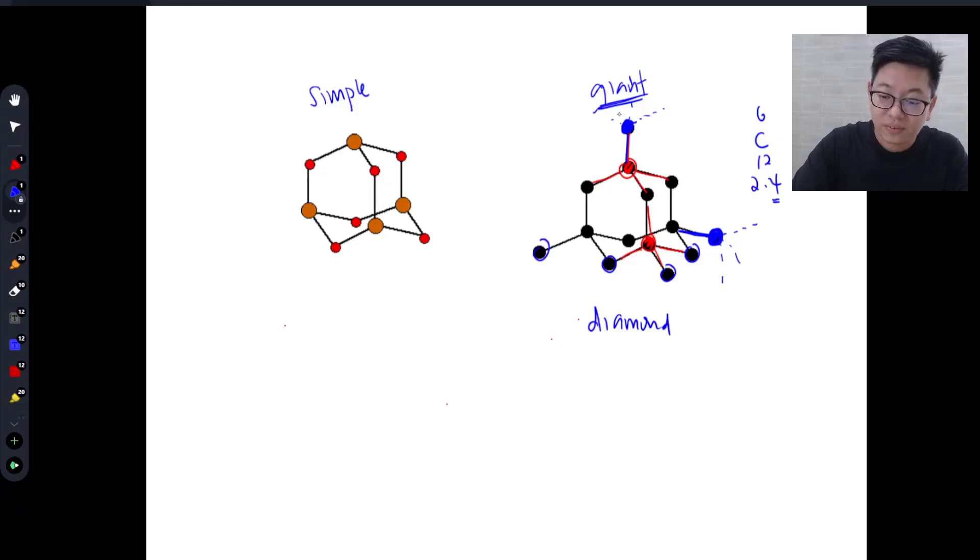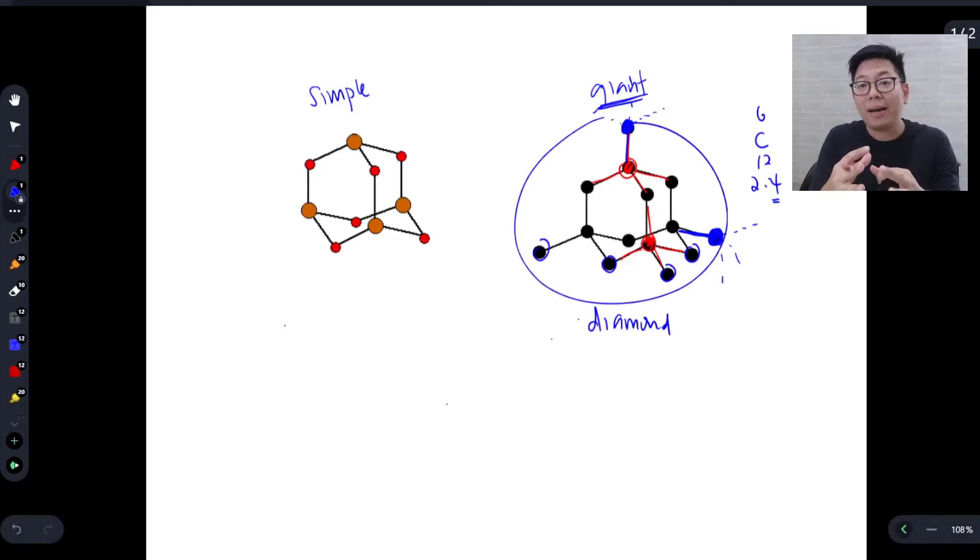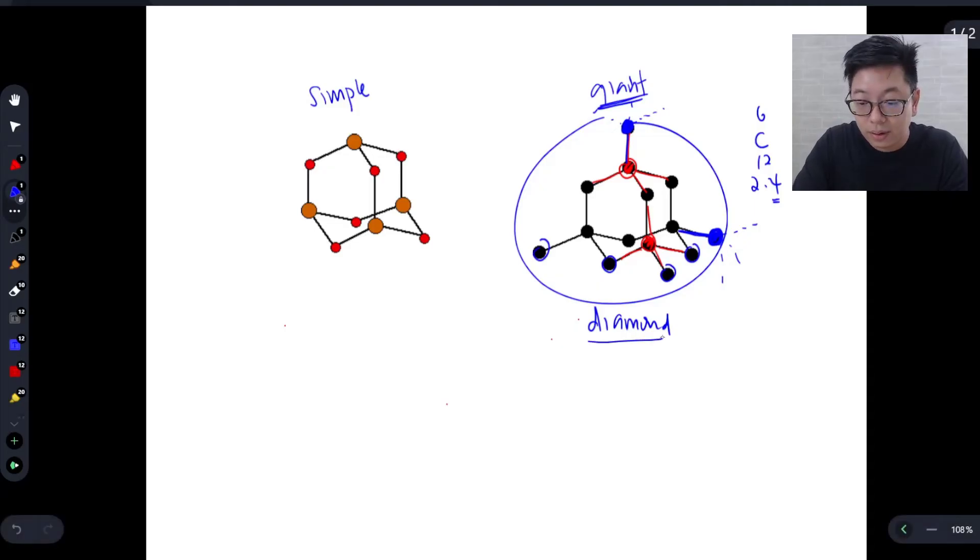And so what we actually have here is a part of a much larger molecule. And that's why diamond, graphite, they have your giant molecular structures. And what you usually see is a very small part of the very, very big molecule. Now, on the other hand, let's talk about this.